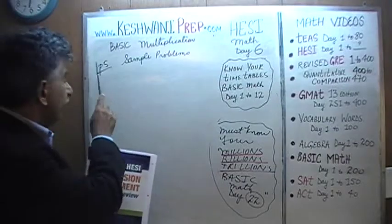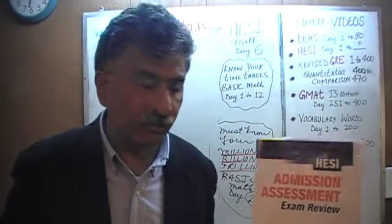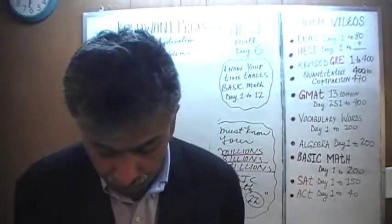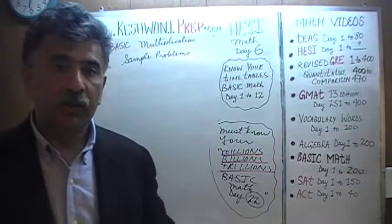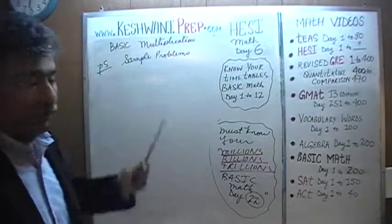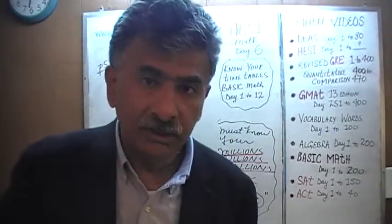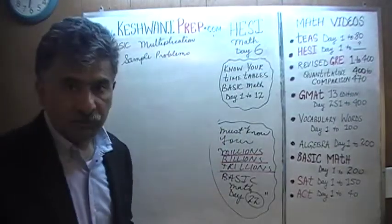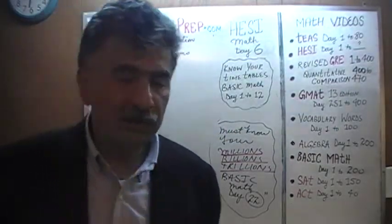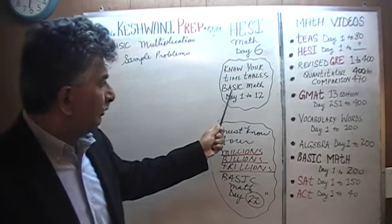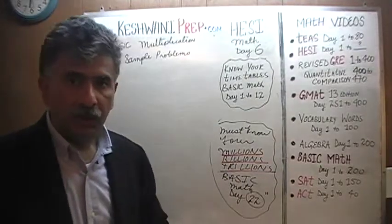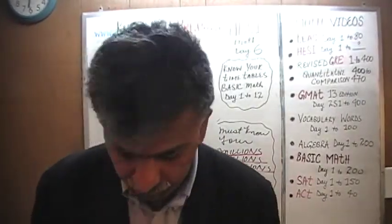Right now we are on page number five and we are in the process of solving problems dealing with the notion of basic multiplication. In order for you to do well in this exam, particularly problems dealing with multiplication, you must know your timetables — one through twelve. If you need help learning your timetables, watch the basic math day one through twelve video right here. It will help you memorize them.